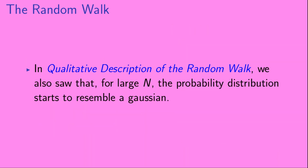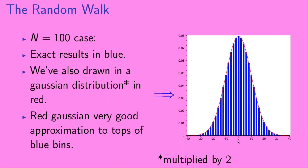In the video qualitative description of the random walk, we also saw that for large n, the probability distribution starts to resemble a Gaussian. For example, here we show the probability distribution for the location of the object after 100 steps, so n equals 100. We show the exact results in blue, but we've also drawn in a Gaussian distribution in red. And we can see that the red Gaussian is a very good approximation to the tops of the blue bins.